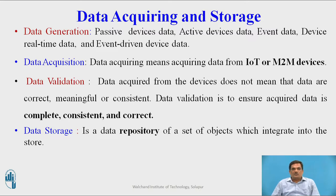Now we will discuss how data is acquired and stored. There are four steps in data acquiring and storing: the first is data generation, the second is data acquisition, the third is data validation, and the last one is data storage. We will now discuss each one — what is meant by data generation, data acquisition, data validation, and data storage.